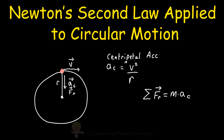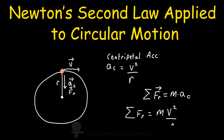We can combine these two equations to see how the radial force is affected by the ball's velocity, the radius of the circle, and the ball's mass. So the sum of all the forces acting on this ball is equal to the ball's mass multiplied by the ball's velocity squared divided by the radius of the circle it's moving in.